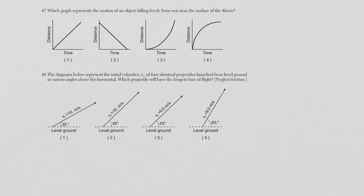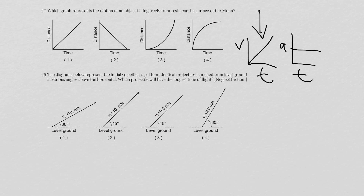Question 47: which graph represents an object falling freely from rest near the moon's surface? The moon has gravity, so objects still accelerate downward. Acceleration is constant, meaning velocity increases linearly (diagonal v vs t graph) and distance increases as a curve (d vs t). The d vs t curve — choice three — is the answer.